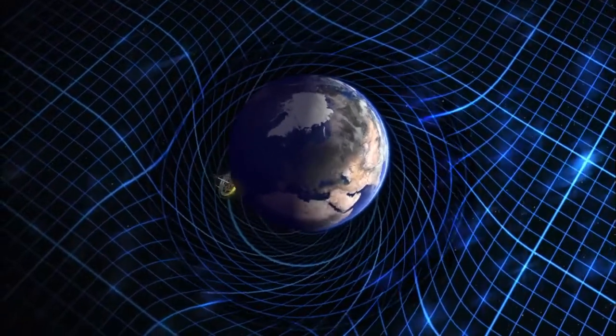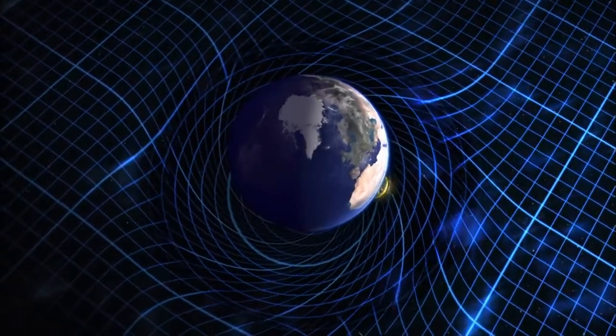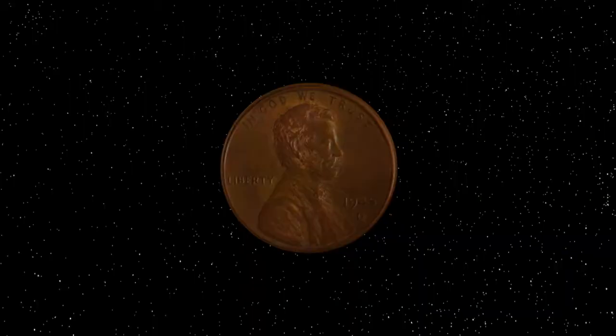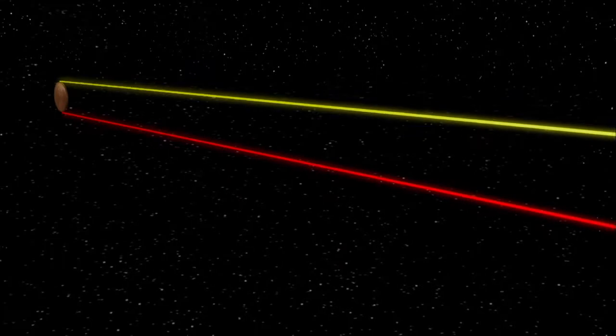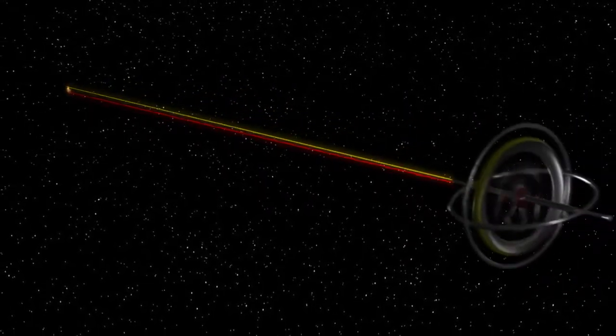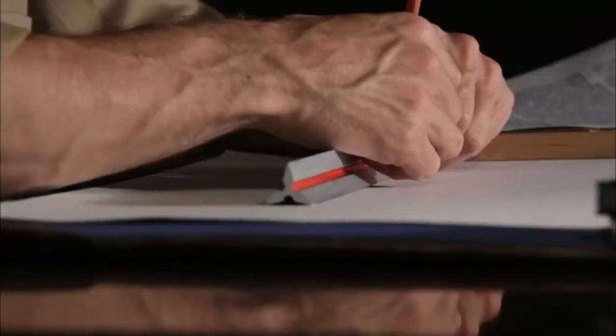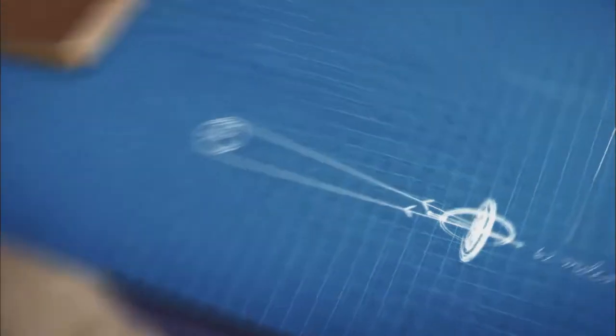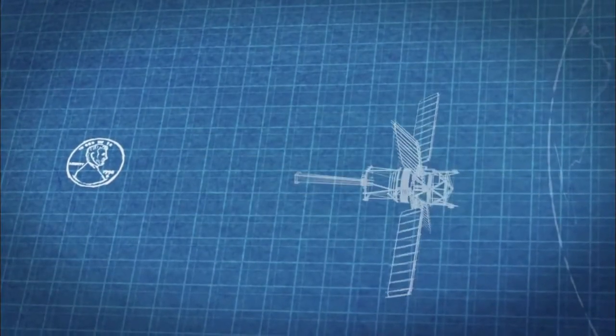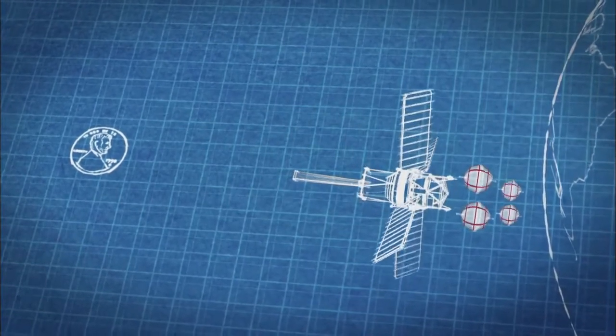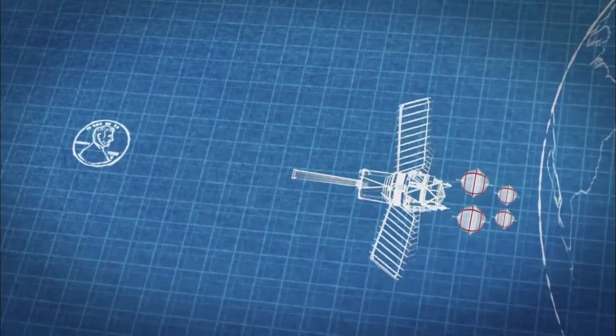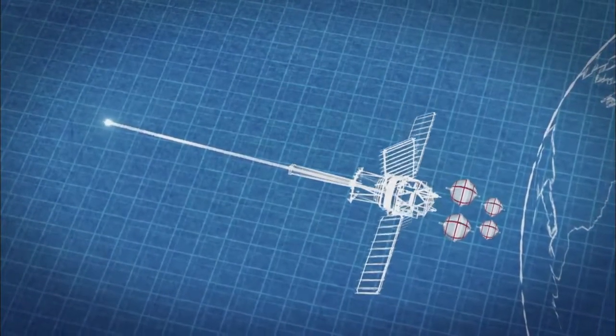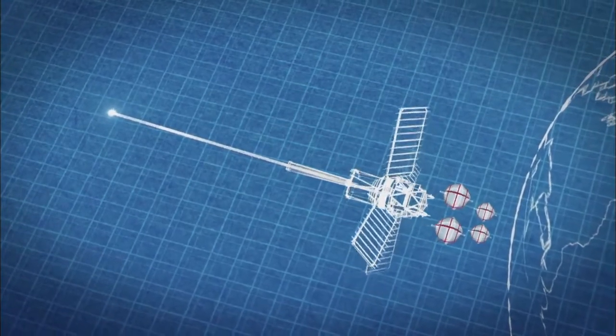There was just one problem. Einstein's theories predict that the Earth's rotation twists space by only a tiny amount, an amount so small it would be like trying to measure the height of a penny from 62 miles away. The team spent more than two years trying to figure out how to make such a precise measurement. They finally devised a plan to attach four freely-floating gyroscopes to a telescope aimed at a distant star. If space twists, then over time, the gyroscopes would no longer point at the star, since they'd get caught up in the swirl of space.